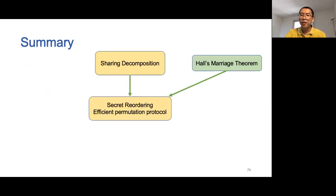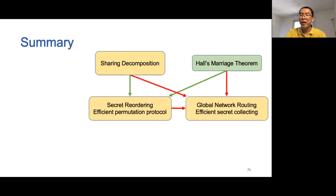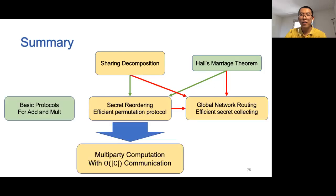As a summary of this talk: we first use sharing decomposition and Hall's Marriage theorem to construct an efficient protocol for secret reordering. Then, relying on our efficient secret reordering protocol, Hall's Marriage theorem, and sharing decomposition, we construct an efficient protocol for global network routing. Finally, together with the basic protocols that evaluate a batch of addition and multiplication gates using packed Shamir sharing, we obtain an MPC protocol that achieves O(C) communication complexity.